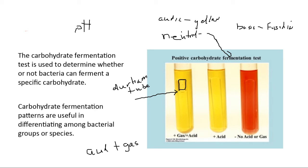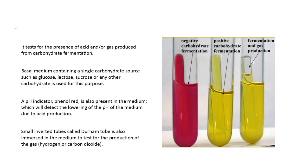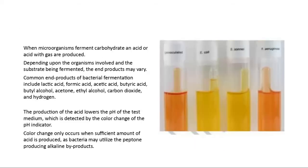We use this test to help identify different types of microorganisms. The three sugars we use are glucose, lactose, or sucrose, though it could be any carbohydrate. The pH indicator is phenol red. Based on what the pH is as the microbe consumes the nutrient and alters the pH in the tube, there'll be a color change. The inverted Durham tube captures metabolic gas — that's its sole purpose.